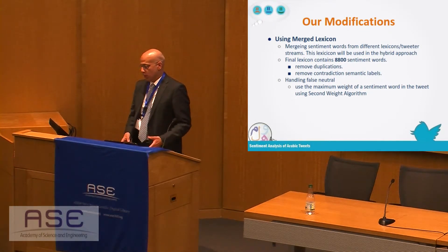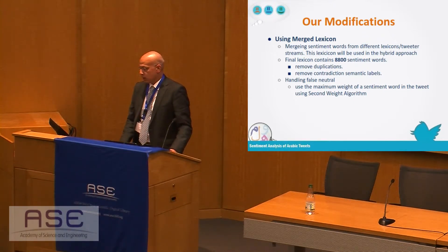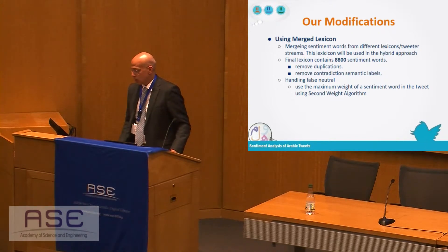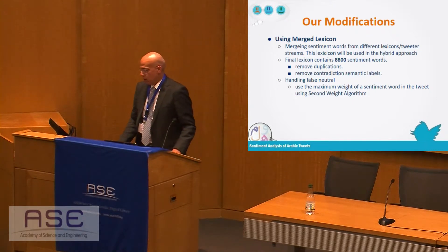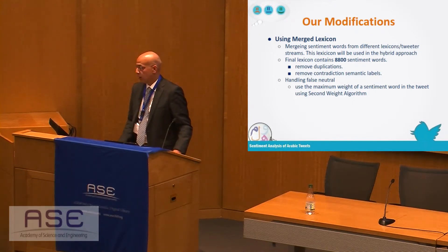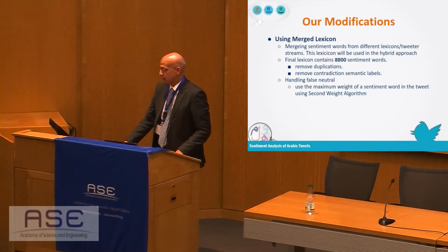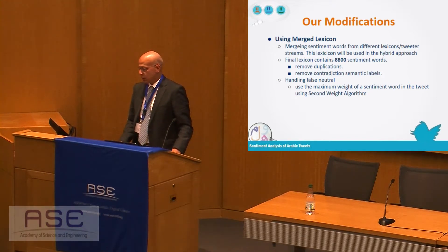Our modification involves merging sentiment words from different lexica. We gathered more than approximately 9,000 sentiment words after removing duplication across all four lexica and removing contradictions in semantic labels, since we found contradictions between the four lexica. For handling false neutrals, we use the maximum weight of a sentiment word in the tweet using the second weight algorithm.